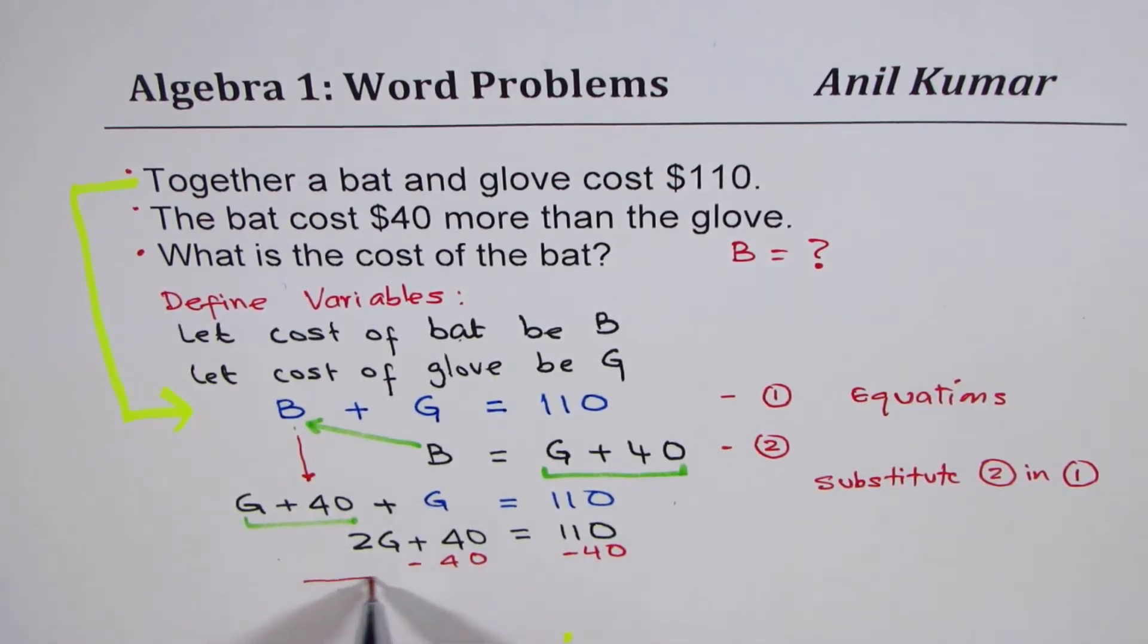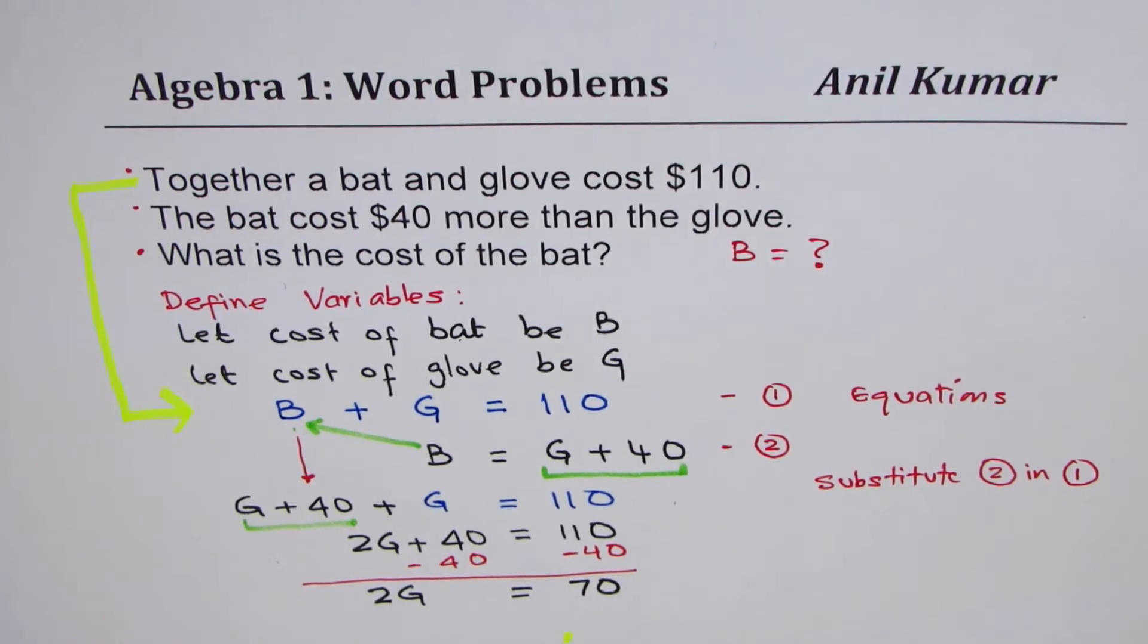So, we take away 40 from each side. So, we do minus 40 and minus 40. So, once we do that, what do we get? We get cost of two gloves. 40 minus 40 is 0 and 110 minus 40 is 70. We get cost of two gloves is 70.